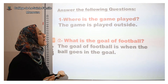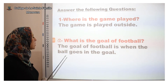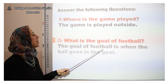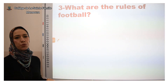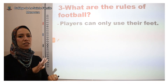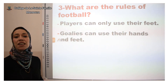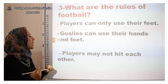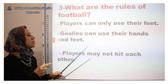The second question: what is the goal of football? How can you score a goal? The goal of football is when the ball goes into the goal. What are the rules of football? There are three main rules. First, players can only use their feet — not their hands. Second, goalies can use their hands or their feet. Third, players may not hit each other. They play together without hitting.